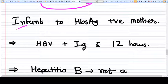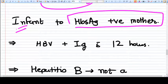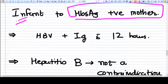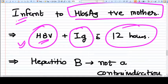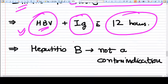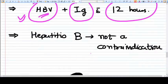If we have an infant that is delivered to an HBsAg-positive mother—that is very common in clinical scenarios—what do we have to do? We have to treat the infant immediately after birth. We need to give the infant HBV vaccine plus immunoglobulin within 12 hours, and hepatitis B vaccine doses are repeated after one and six months.